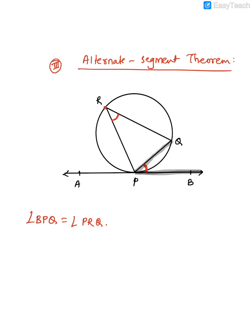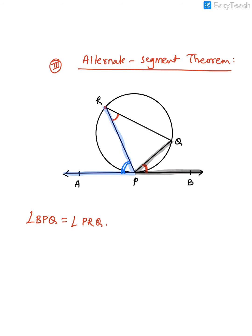Using the same logic, the angle on the other side between the tangent and the chord is equal to the angle opposite to that chord. So angle APR is equal to angle PQR. The reason for these statements is the alternate segment theorem.